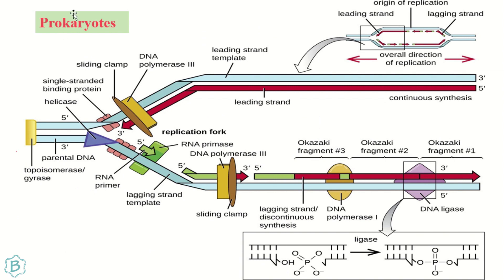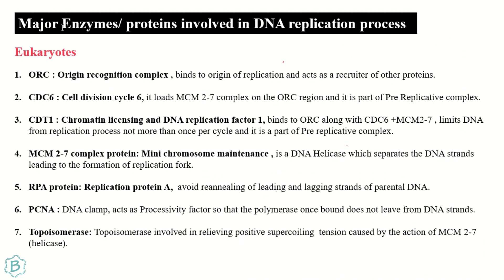This is a pictorial representation of how the prokaryotic cell undergoes the process of replication, with all the enzymes discussed shown here. DNA ligase, polymerase I, the leading strand and lagging strand, RNA primers, topoisomerase, helicase, single-stranded binding proteins, and DNA polymerase III — every enzyme is shown here.